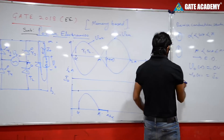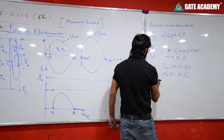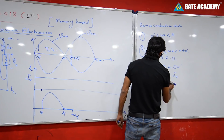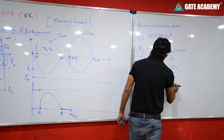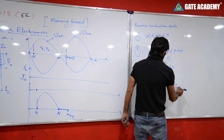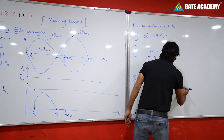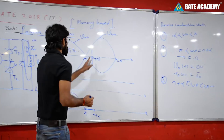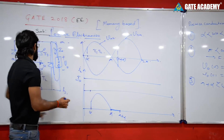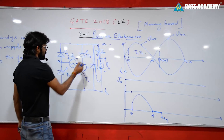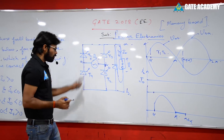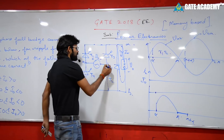One cycle is complete. From π+alpha to 2π, it's the next triggering at π+alpha. T3 and T4 are now triggered. In this interval, the B terminal is positive and the A terminal is negative, giving us VBA voltage.